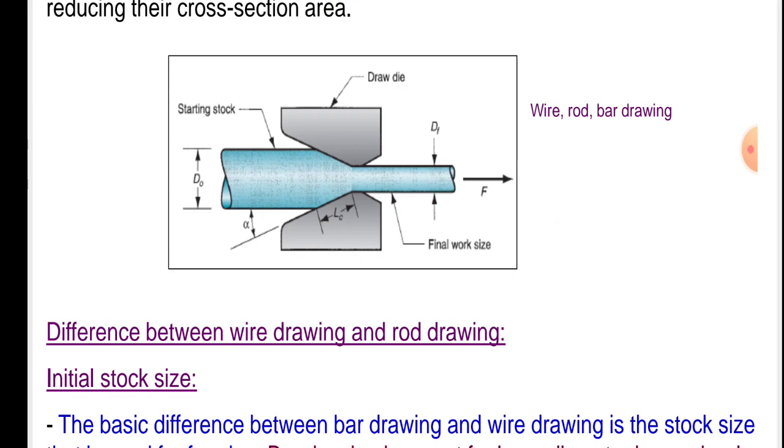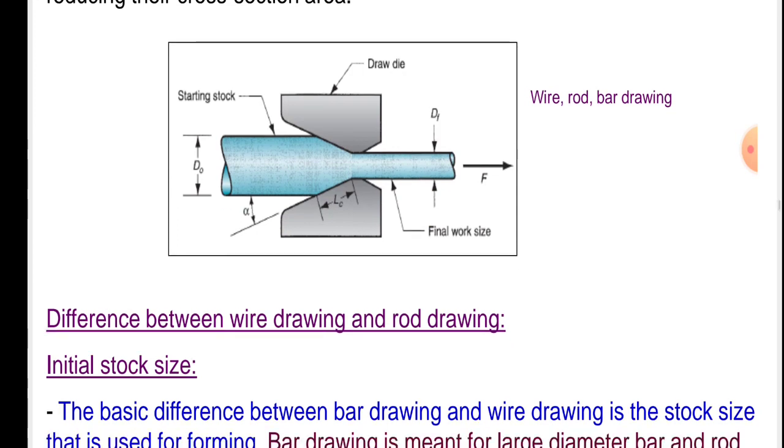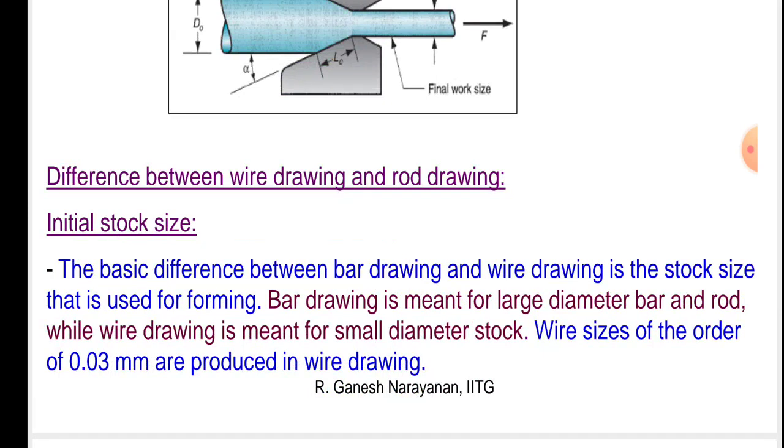Wire, rod, bar drawing: Alpha is the angle of the stock with the die. There are two dies, upper die and lower die. The final workpiece of required size is produced. DF is the diameter of the final workpiece, rod, wire, or bar.